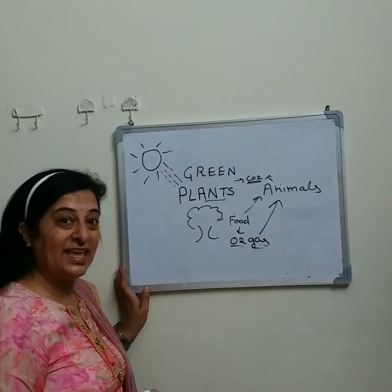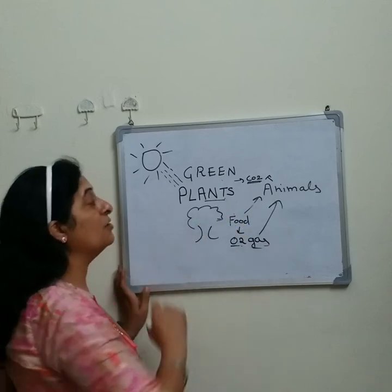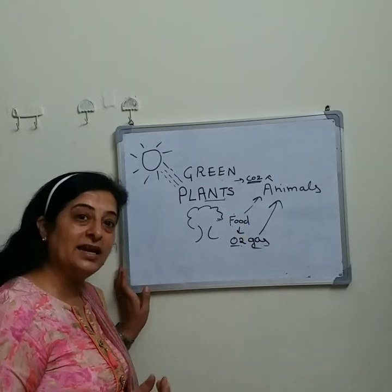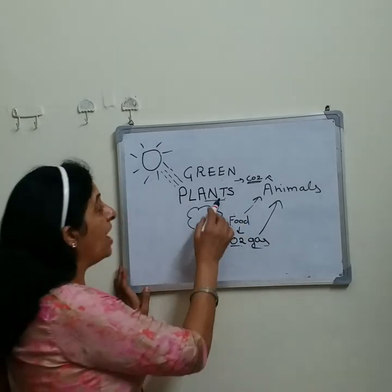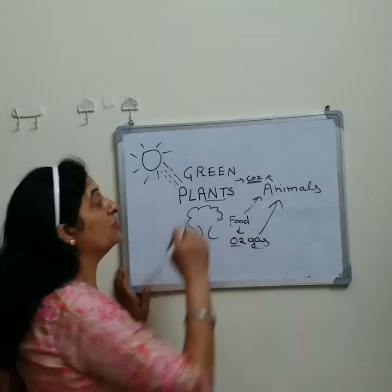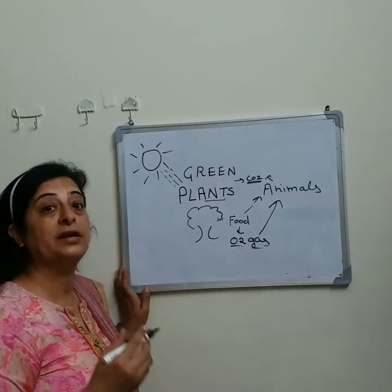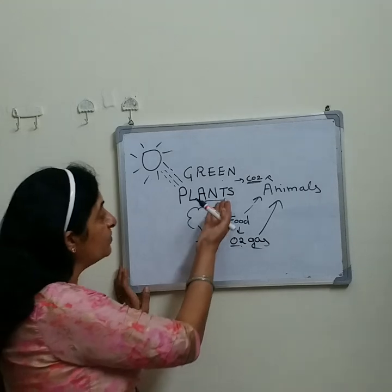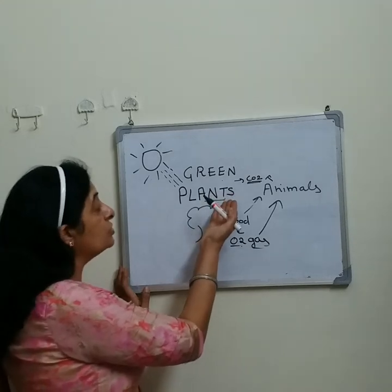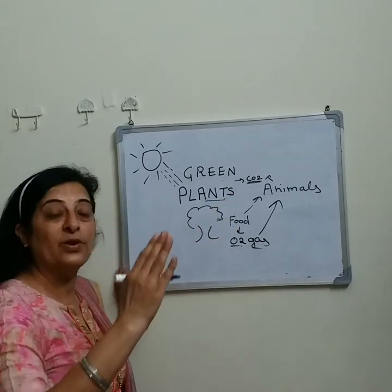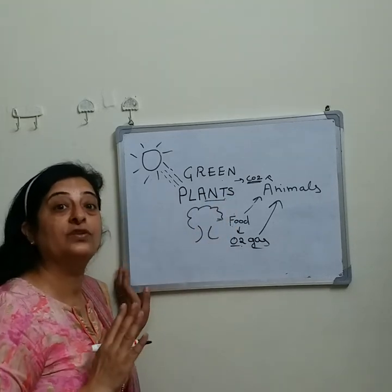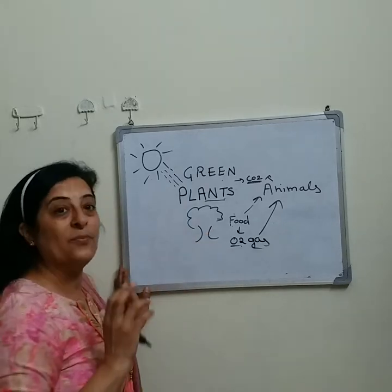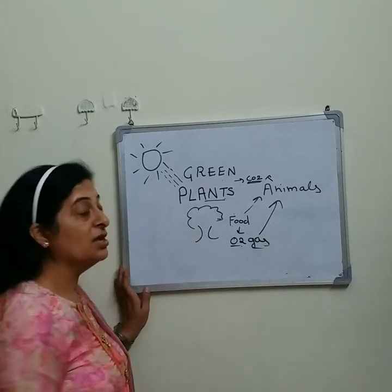So we can say animals depend on plants for food and oxygen, and plants depend on animals for carbon dioxide gas. These plants also maintain the temperature of the earth.